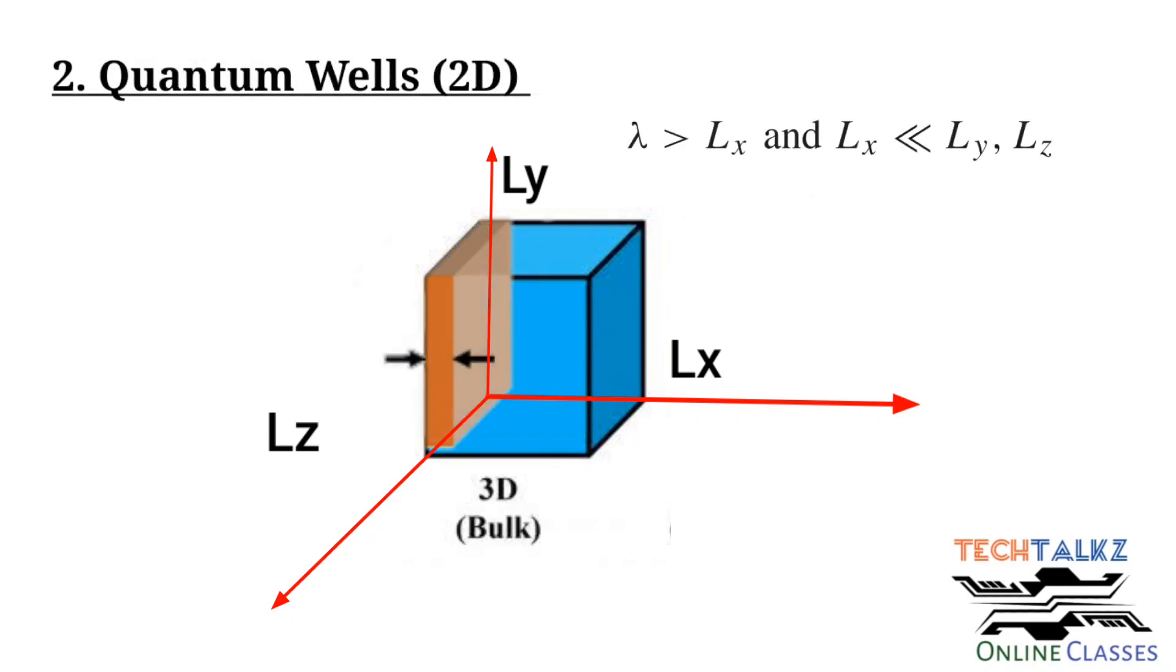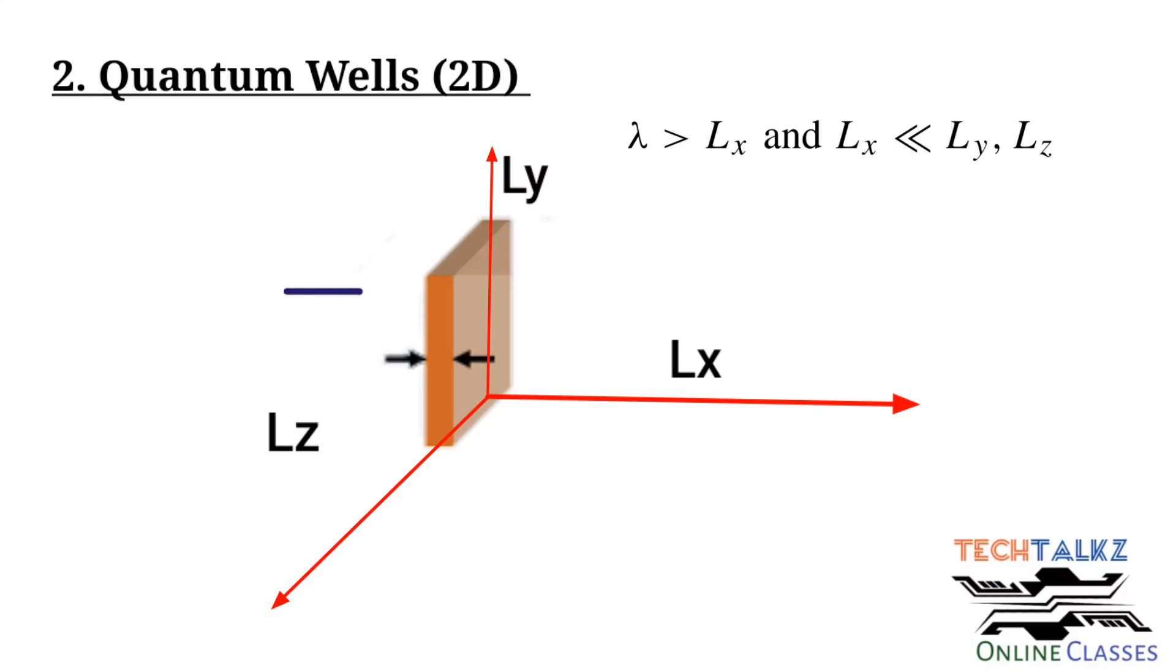Now consider the dimension across x axis is limited within the characteristic length. Characteristic length is greater than Lx. Dimension across other two axis are not restricted. This means the electron movement is confined across the x axis.